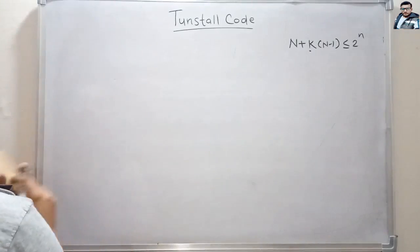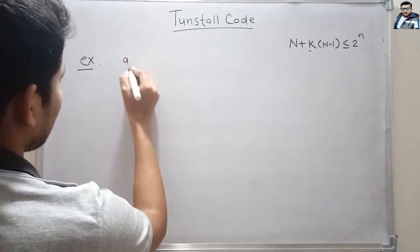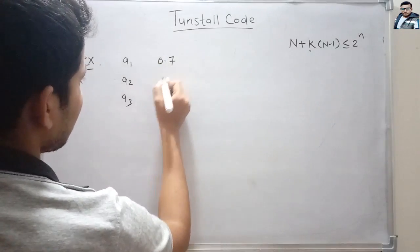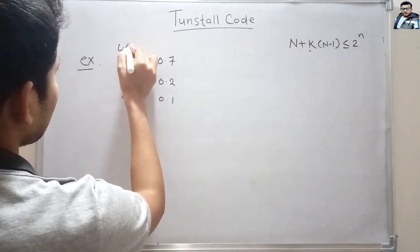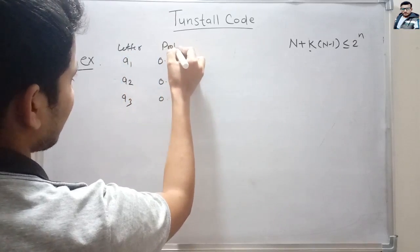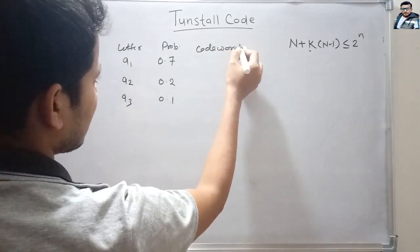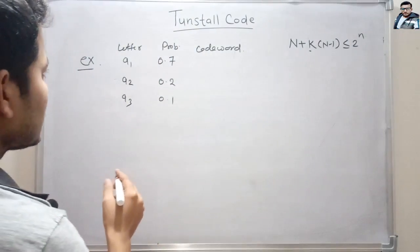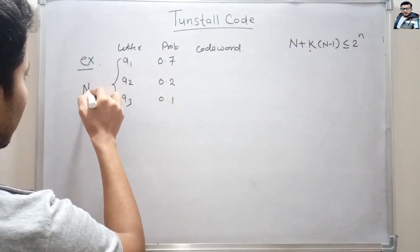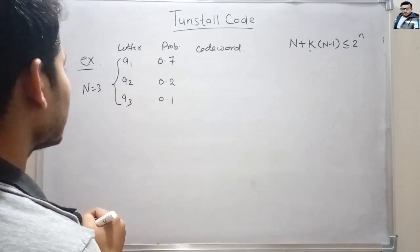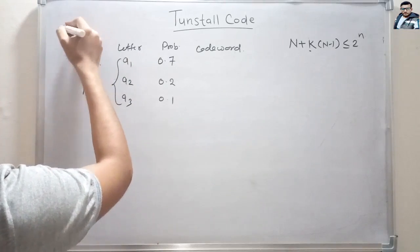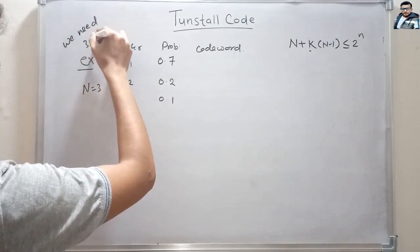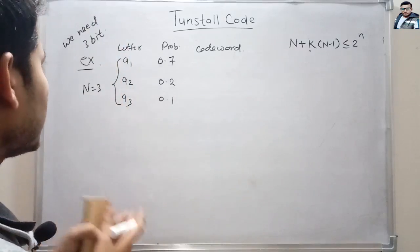Let's see an example. Suppose there are three letters a1, a2, a3 having probabilities 0.7, 0.2, and 0.1. We have to find the Tunstall code for these letters. In this example, n equals 3 because there are 3 source letters, and we want to generate a 3-bit Tunstall code.